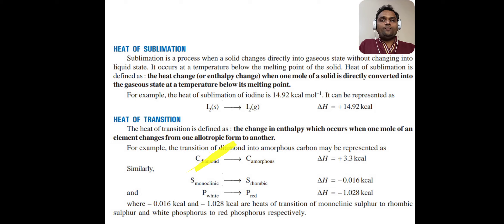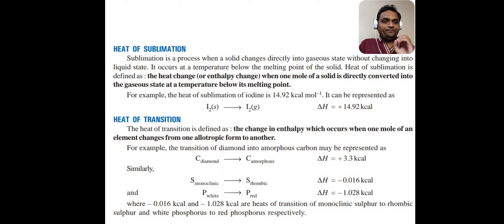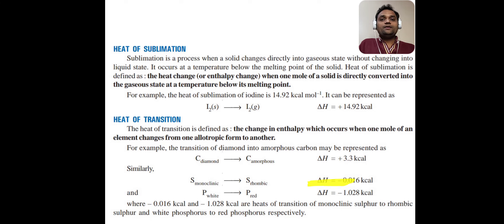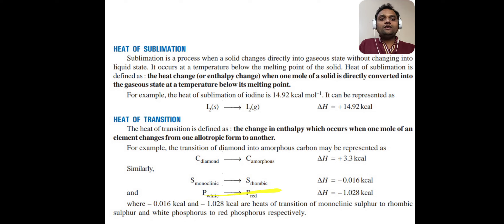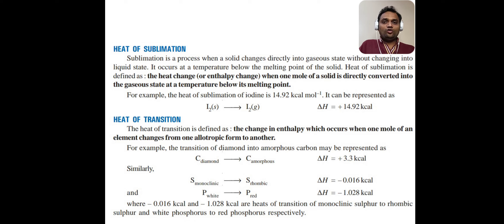The conversion of one allotrope of carbon into another allotrope of carbon involves a change in heat or enthalpy, called the heat of transition. Similarly, the conversion of sulfur monoclinic into sulfur rhombic has a delta H value of minus 0.016 kilocalories — the negative sign means heat is evolved. Likewise, conversion of phosphorus white into phosphorus red has a delta H value of minus 1.028 kilocalories, again negative, indicating evolution of heat. These are all allotropic transitions.